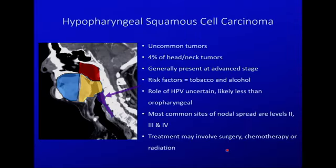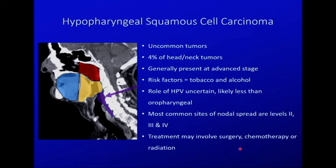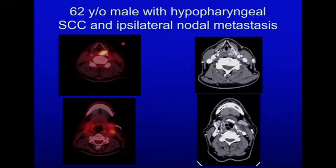Hypopharyngeal squamous cell carcinoma is only about 4% of head and neck tumors. Unfortunately these generally present at an advanced stage, are related to tobacco and alcohol, and it is unclear if HPV has a role. They commonly spread to levels 2, 3, and 4. Treatment may be a combination of surgery, chemotherapy, or radiation therapy. Here is an example of a hypopharyngeal primary tumor on PET-CT and CT, with partially necrotic nodal metastases.